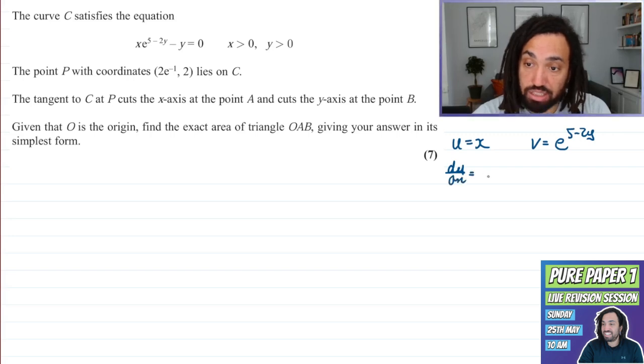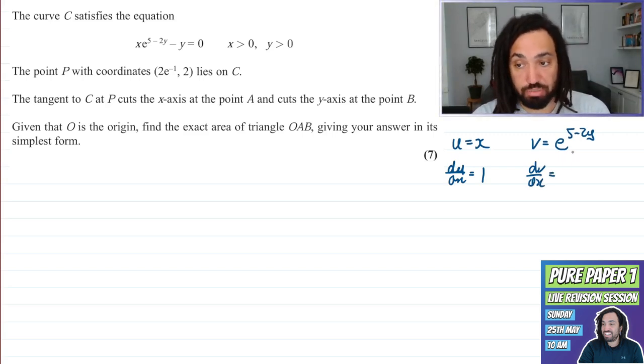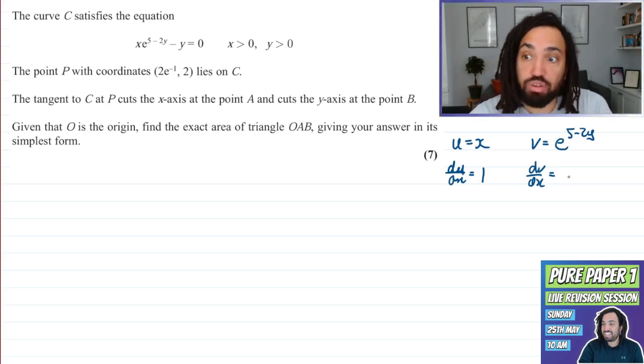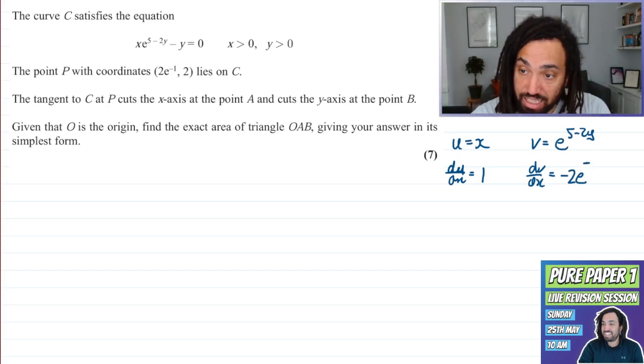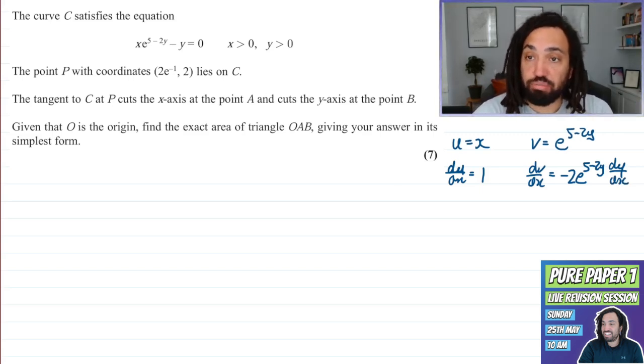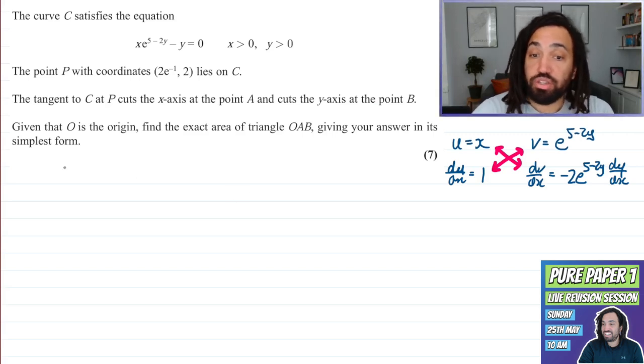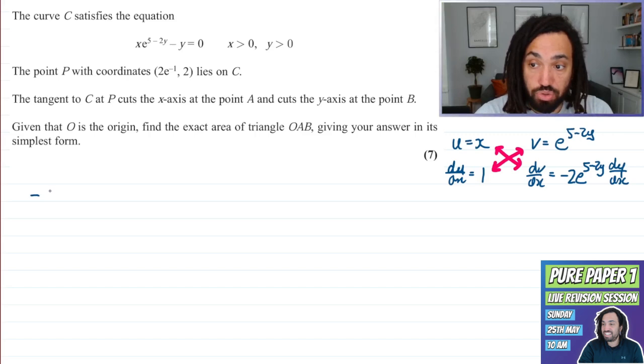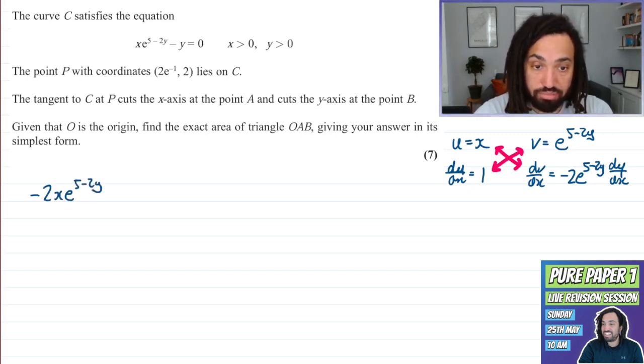We then differentiate with respect to X which gives us 1 and I differentiate over here with respect to X. Now this is a function of Y so when we differentiate with respect to X, we differentiate with respect to Y but then we must times by DY by DX. So differentiate with respect to Y gives us minus 2 E to the 5 minus 2Y and then we must multiply through by DY by DX. Okay, so the product rule tells us to times these two and then add it on to these two times together. So this is going to give us, when I multiply X by minus 2 E to the 5 minus 2Y, we get minus 2 X E to the 5 minus 2Y DY by DX and then the other one which we're going to add on is just going to be E to the 5 minus 2Y.